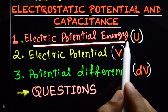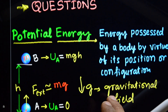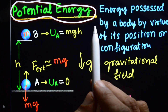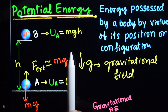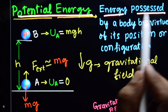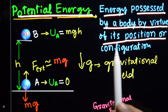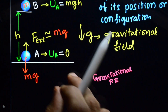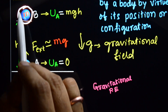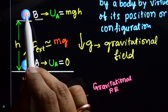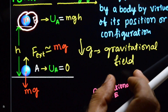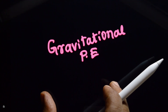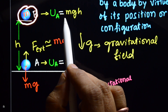Before discussing Electric Potential Energy, what do you mean by Potential Energy? That is the energy possessed by a body by virtue of its position or configuration. Now, gravitational potential energy — suppose this is a body, its mass is m. Because of its position in a gravitational field, it has some energy. This energy is gravitational potential energy, that is mgh.